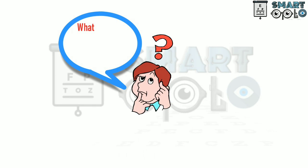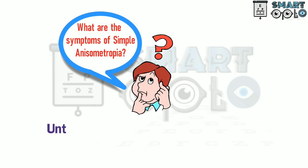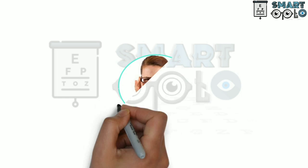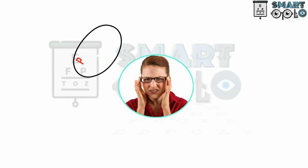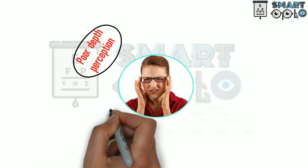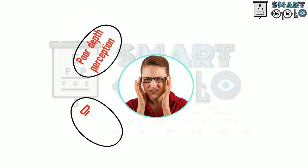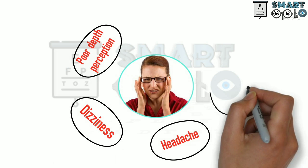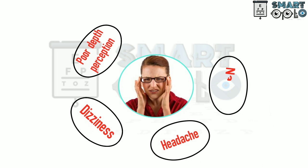Now let's see what the symptoms of simple anisometropia are. Untreated anisometropia can cause a variety of symptoms including poor depth perception, dizziness, headache, and nausea.